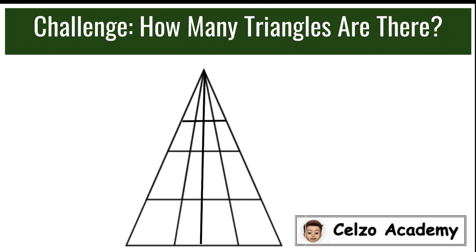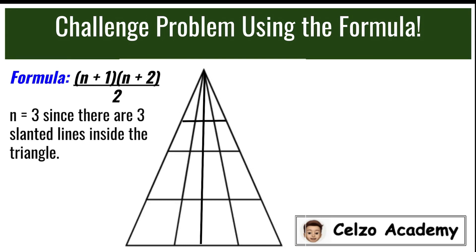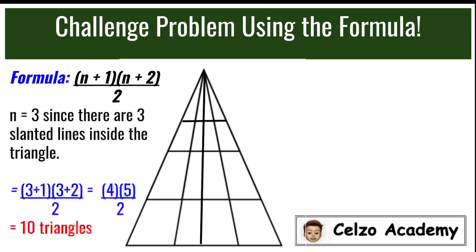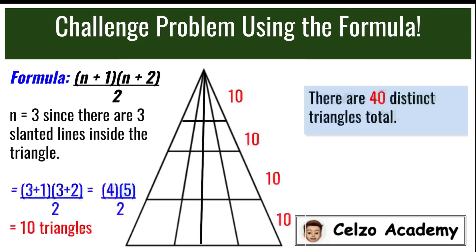Now let's apply the formula to a more complex figure. How many triangles are there? Instead of counting, we use (n + 1)(n + 2) / 2. In this case n = 3, since there are three slanted lines inside the triangle. Substituting: (3 + 1)(3 + 2) / 2 = 4 × 5 / 2 = 10 triangles per sub-triangle. So there are 40 distinct triangles total — 10 for the smallest, 10 for the second, 10 for the third, and 10 for the largest triangle.